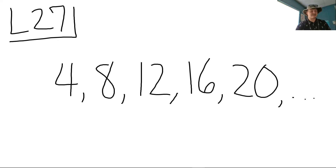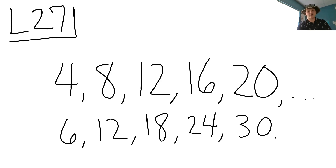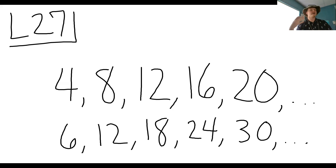If we were listing the multiples of six, we would have six, 12, 18. Another way of thinking about it is counting by that number — six, 12, 18, 24, 30, 36, 42, 48, so on and so forth. Those are your multiples.